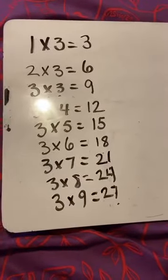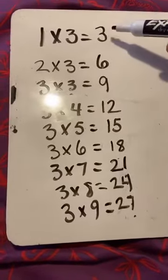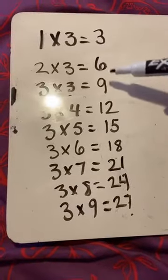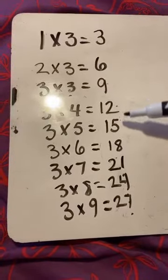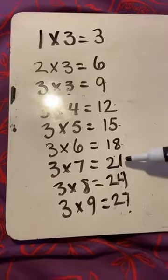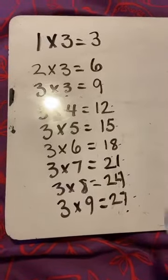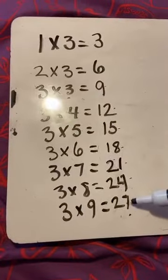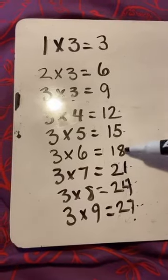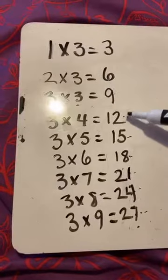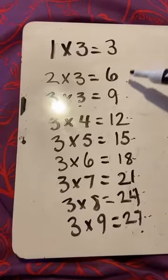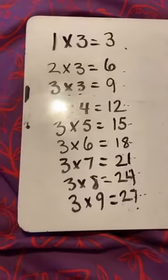So I want you to practice counting with me by 3s. Are you ready? Here we go. 3, 6, 9, 12, 15, 18, 21, 24, 27. Now go backwards. Ready? 27, 24, 21, 18, 15, 12, 9, 6, 3. Very good work.